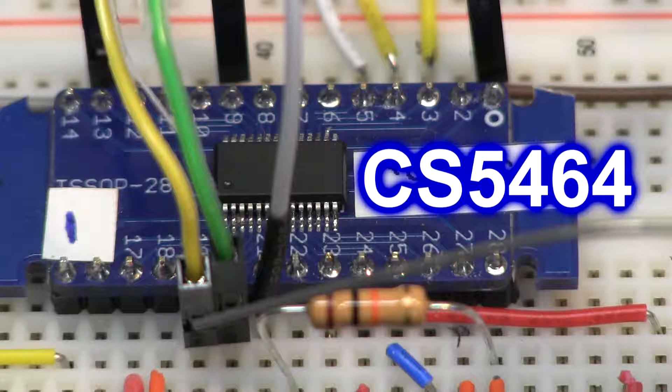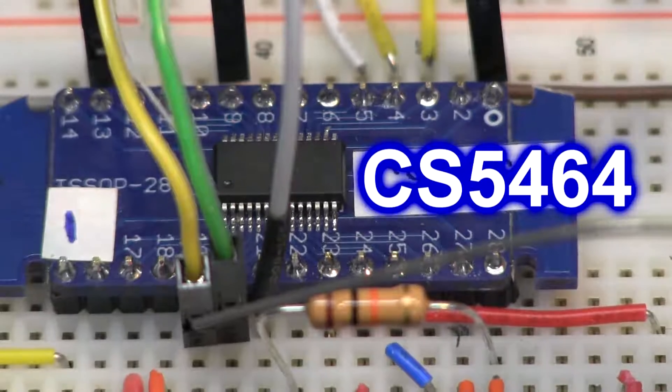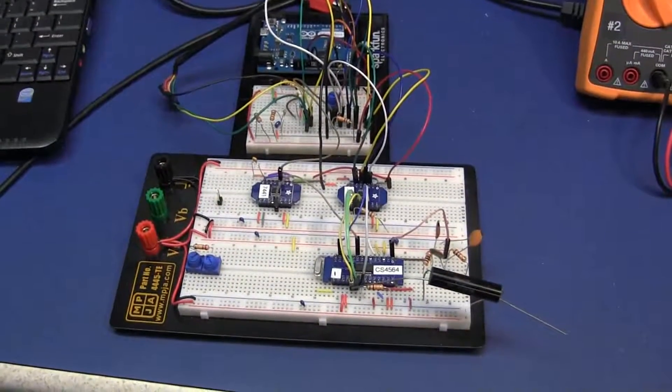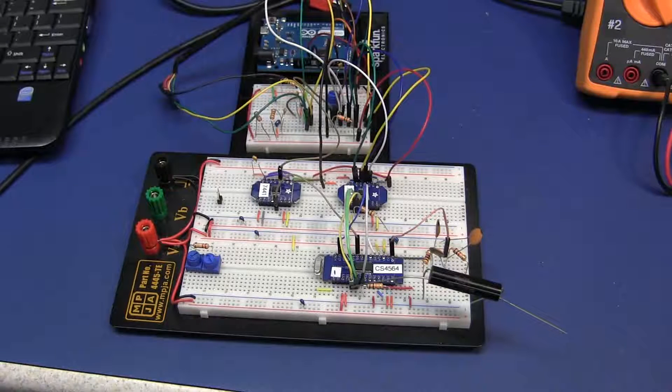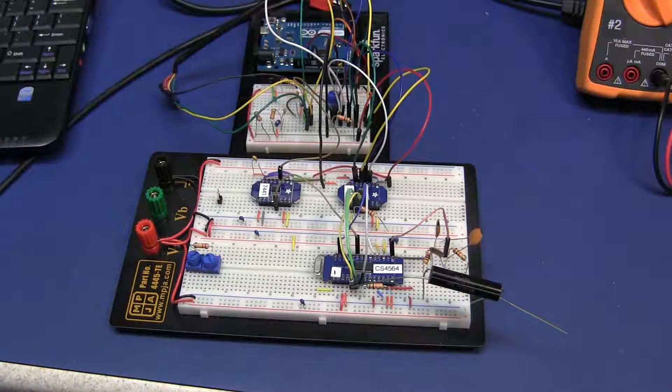Continuing the series on examining devices to measure AC current, this time we'll try out the CS5464 from Cirrus Logic. Here it is set up on the breadboard, but we're going to skip this test and instead build up a prototype and run AC line power through it.